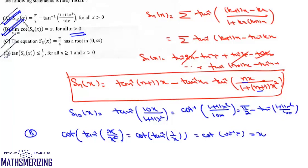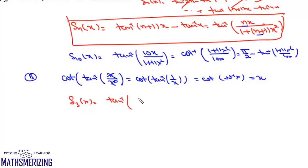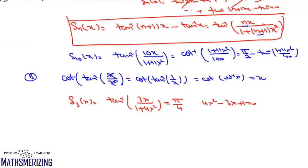Now checking option C: S_3(x) = π/4 has a root in (0, ∞). We have S_3(x) = tan inverse(3x / (1 + 4x²)). Setting this equal to π/4 gives 4x² - 3x + 1 = 0. Computing the discriminant: D = 9 - 16 = -7, which is less than 0. This means the quadratic is always positive, so the equation has no real roots.